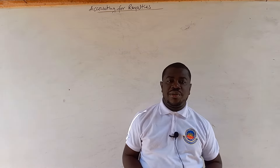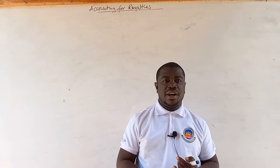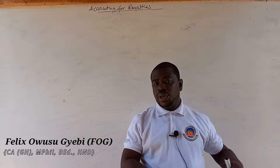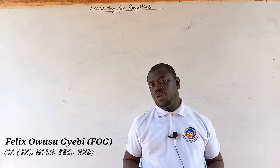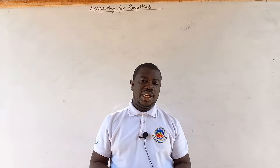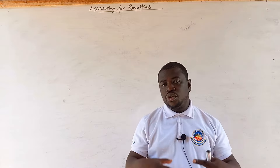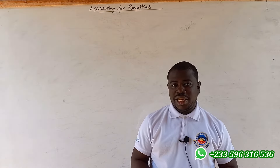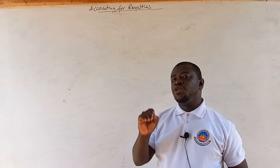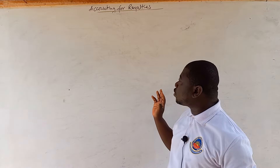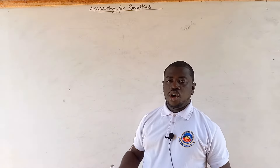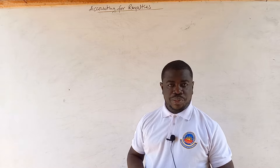We are going to prepare accounts in the books of the company, which is the tenant, and also in the books of de-Homaji, who is the landlord. In this video, we are going to focus on the first requirement — the books of the tenant. Let us start by preparing the working schedule. Before you begin any question on royalties, you must first prepare a working schedule.